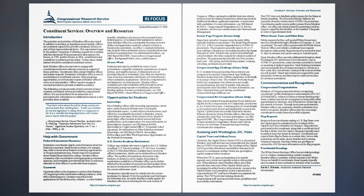Help with Government: Federal Government Resources. Sometimes constituents simply seek information about the federal government. Small business owners, for example, may want to know about federal contracting opportunities or the procurement process. Parents may have questions about federal financial aid for college. Member offices commonly refer constituents to the appropriate government agencies, and sometimes provide website links or reference materials in their offices to assist with these inquiries.